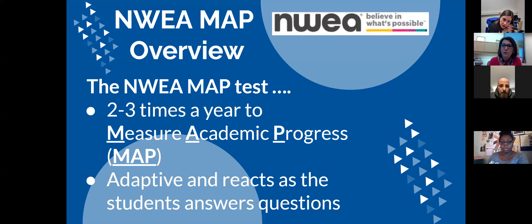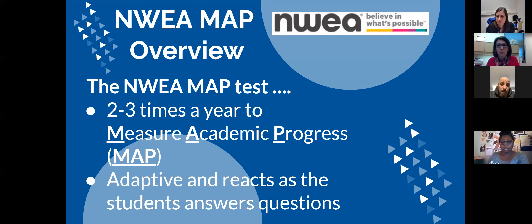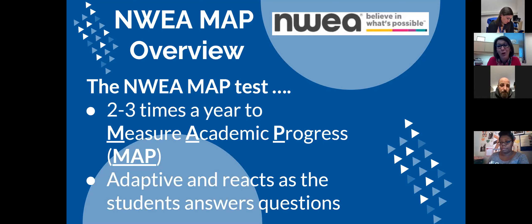Typically we've done it twice a year, sometimes three times a year. We give the NWEA MAP assessment in the fall to get a baseline of where students are starting the grade year, and it also helps compare how they ended the year. Then we take it again in the winter, and sometimes in the spring as well. Why do we call it MAP? It has nothing to do with geography — it actually stands for Measure of Academic Progress.